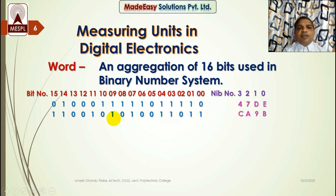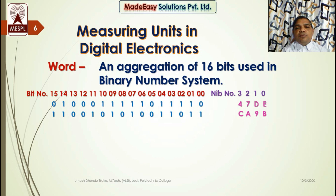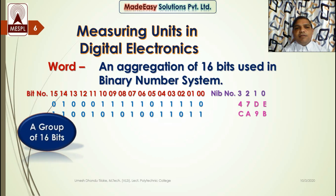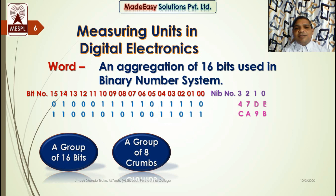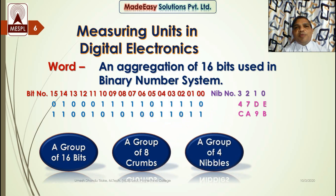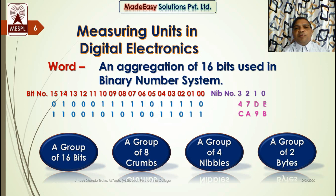For example: 4 is 0110, 7 is 0111, D is 1101, and E is 1110. So a word is a group of 16 bits, a group of 8 crumbs, a group of 4 nibbles, and a group of 2 bytes. Taking the example CA9B: CA represents nibble 3 and nibble 2 — these are 8 bits forming the upper byte of a word, that is bit 15 to bit 8. 9B is the lower byte. C (1100) is the upper nibble of the upper byte, A (1010) is the lower nibble of the upper byte, 9 is the upper nibble of the lower byte, and B is the lower nibble of the lower byte.